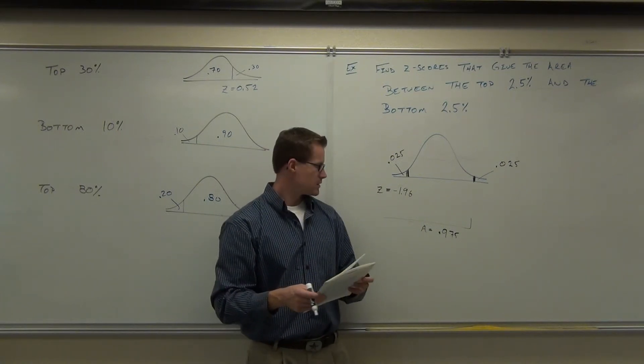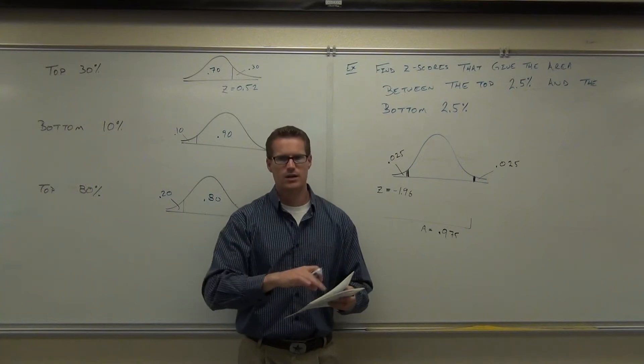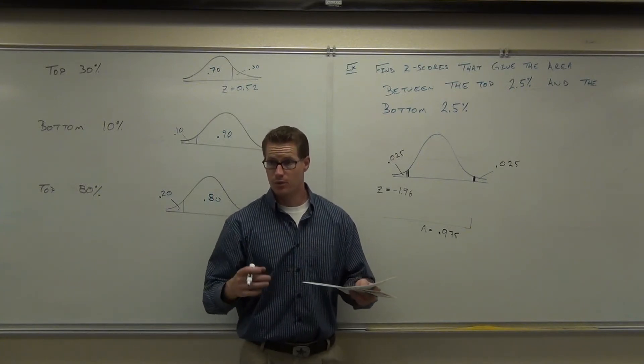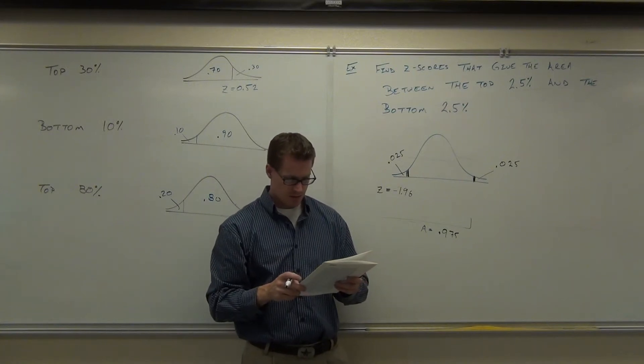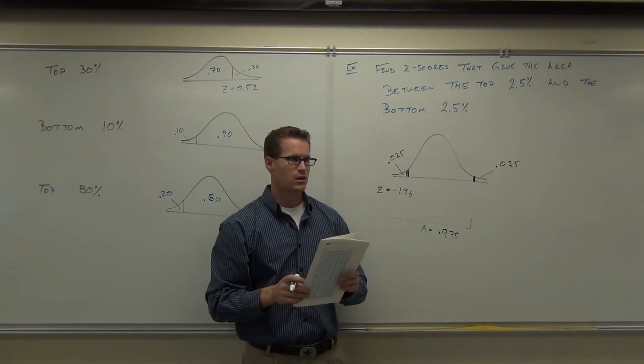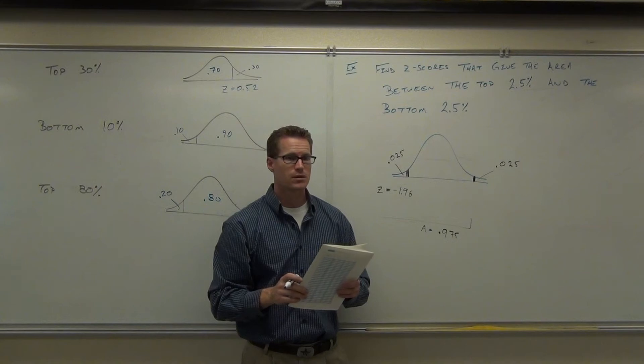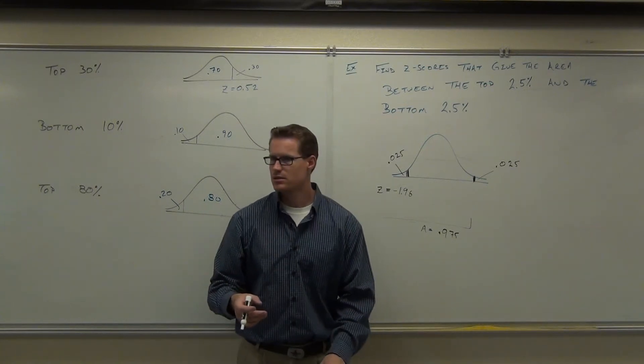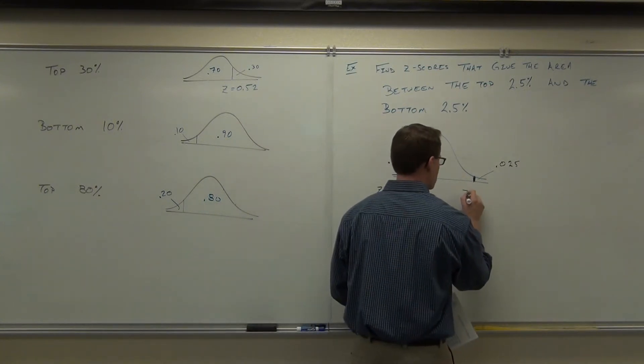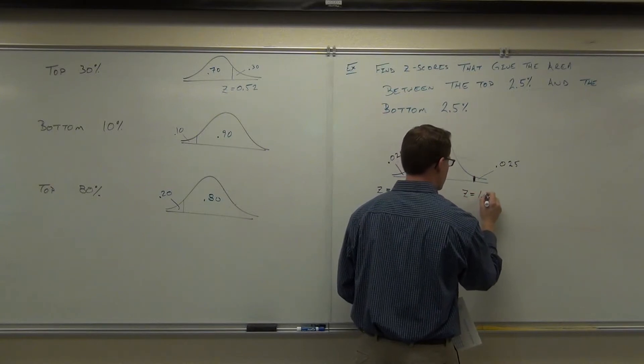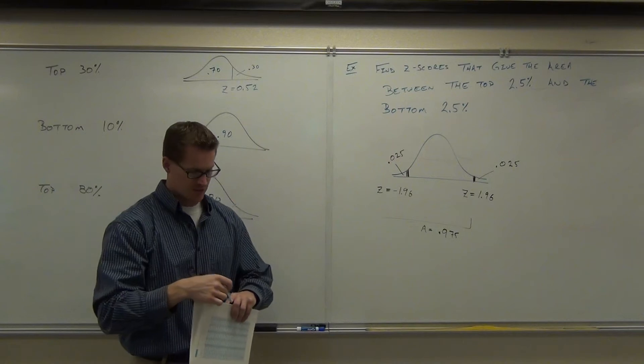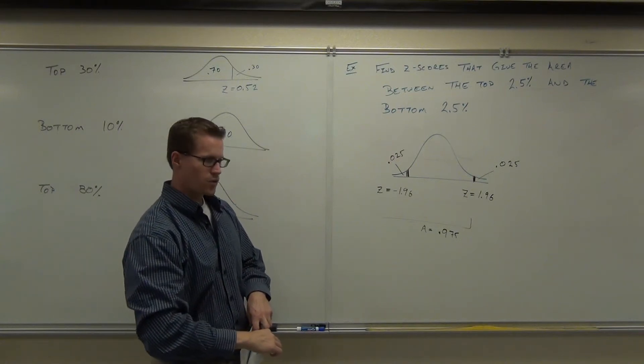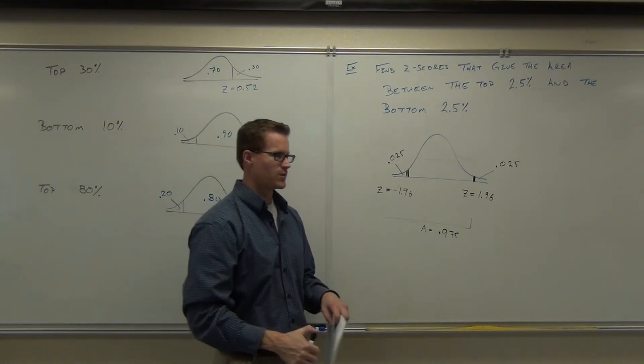Look up 0.975 on the area portion of your table. Now we're going to be in positive z-scores now. We're to the right of the mean. If you look it up, what do you think you're going to get? 1.96. Is that a coincidence? It's magic. It's magic. Clearly magic. I mean, that's awesome. Crazy math stuff.